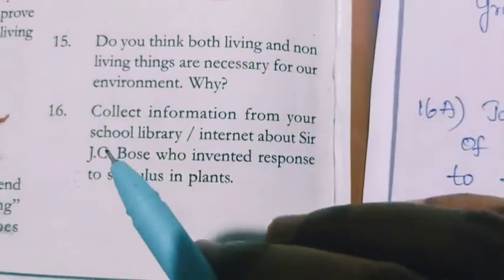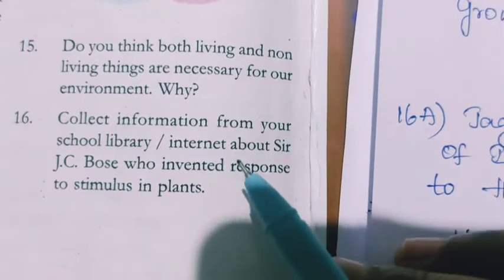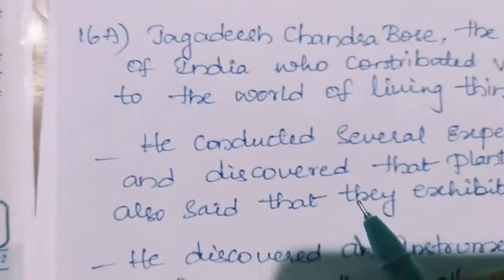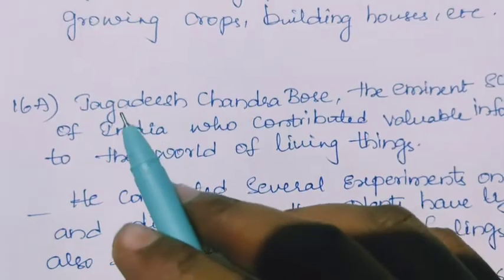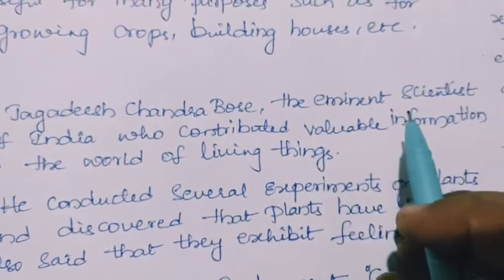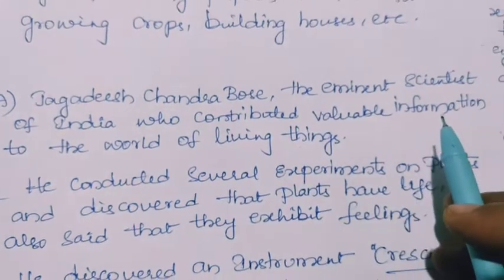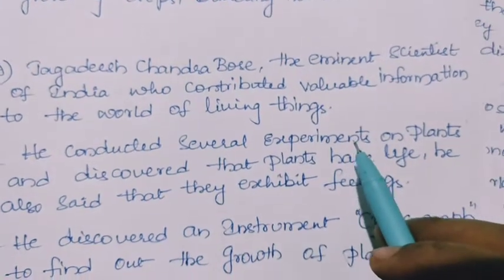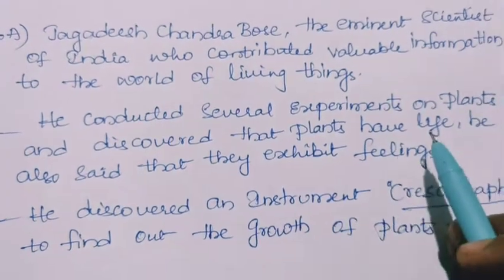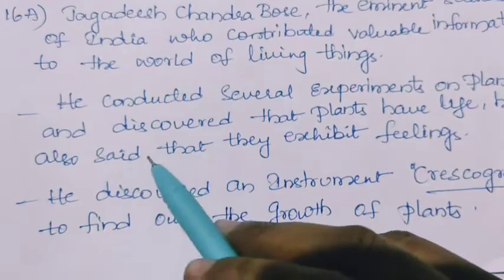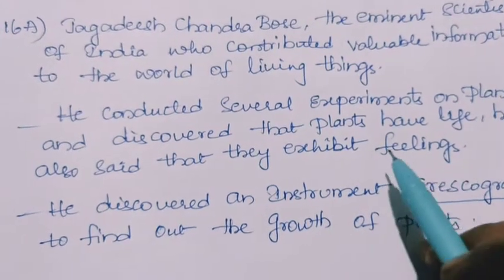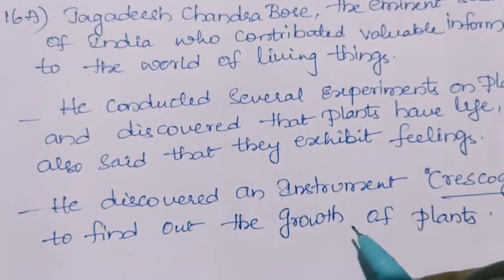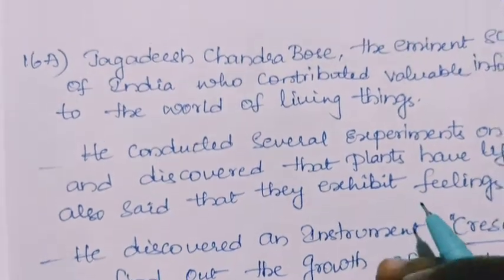Sixteenth question: collect information about Sir J.C. Bose — Jagadish Chandra Bose — who invented the concept of response to stimulus in plants. He is an eminent scientist of India who contributed valuable information to the world of living things. He conducted several experiments on plants and discovered that plants have life. He said they exhibit feelings, that is response to stimulus. He also discovered an instrument, the crescograph, to find out the growth of plants.